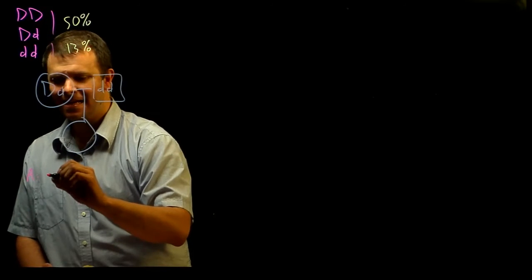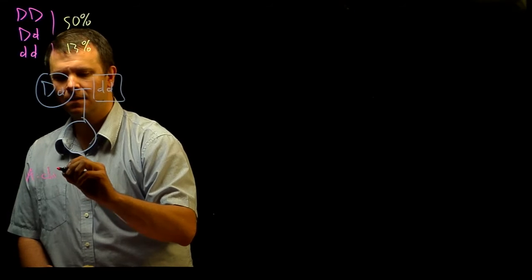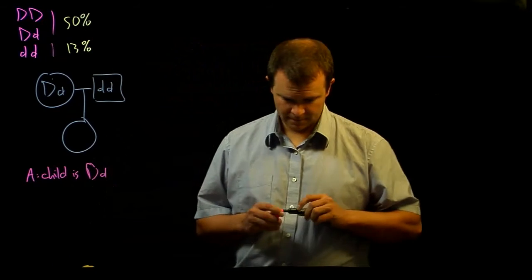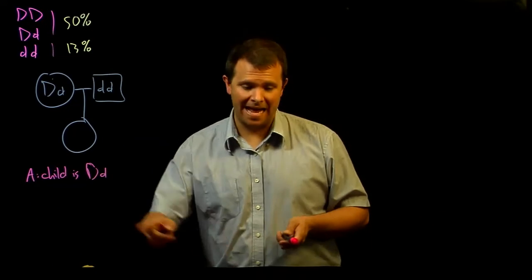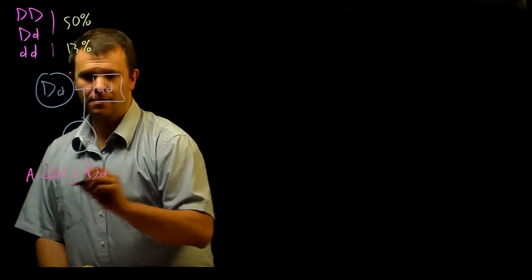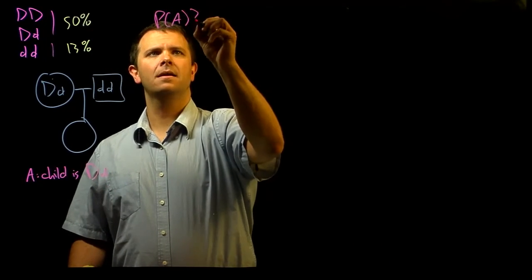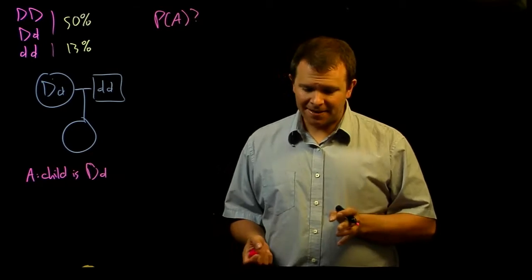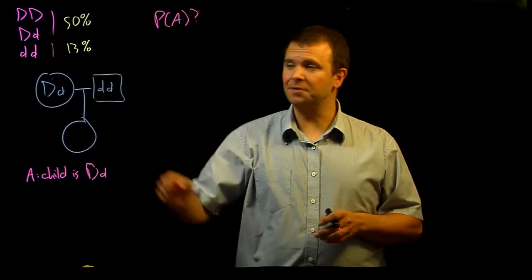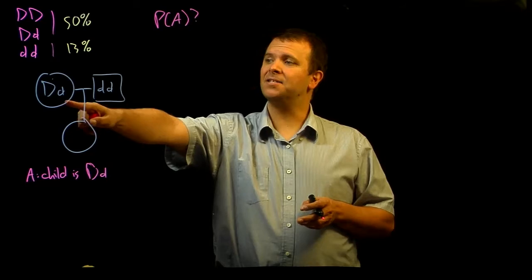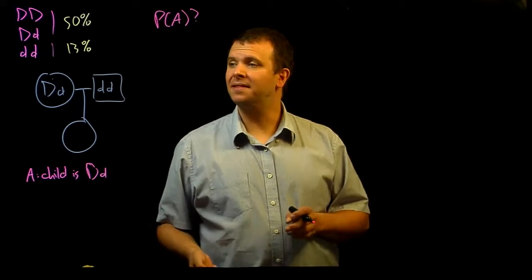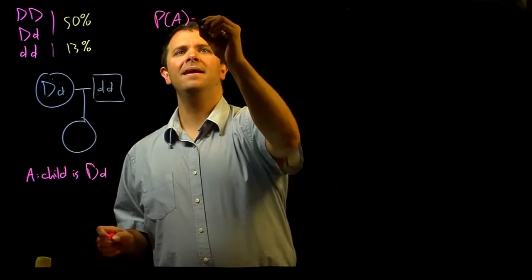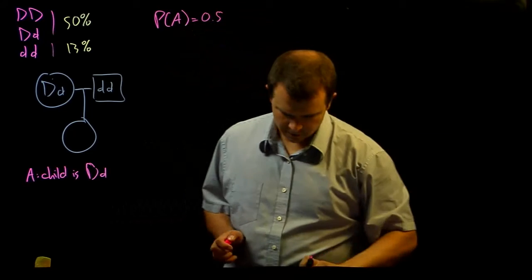So, our event A is that the child genotype is big D little d. What is the probability of A? Well, basic transmission genetics tells us that the child will receive a little d from their father. But there's a 50% chance that they will receive the disease-causing dominant allele from their mother. And so, the probability of A is 0.5.